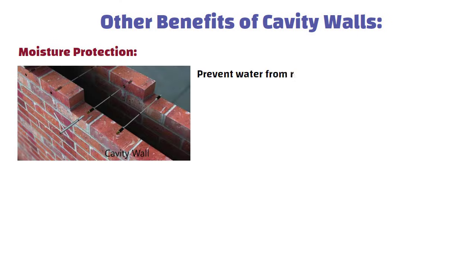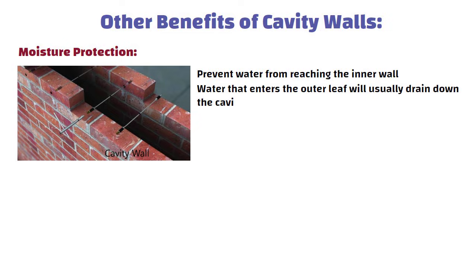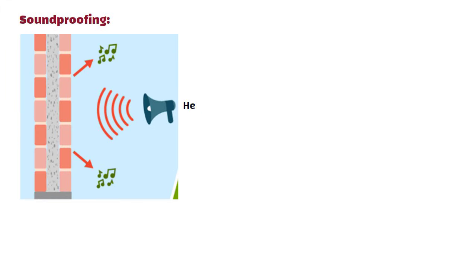Other benefits of cavity walls. Moisture protection: The cavity helps prevent water from reaching the inner wall. Water that enters the outer leaf will usually drain down the cavity and exit at the bottom. Soundproofing: The cavity can help reduce sound transmission between rooms or from the outside.